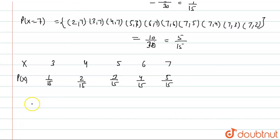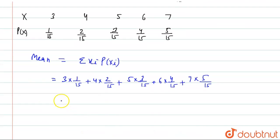Mean is equal to Sigma x_i times P(x_i). This will be equal to 3 times 1/15 plus 4 times 2/15 plus 5 times 3/15 plus 6 times 4/15 plus 7 times 5/15. This will be equal to, taking 15 as LCM, 3 plus 8 plus 15 plus 24 plus 35, which equals 85 by 15. This is equal to 17 by 3, which is the mean.